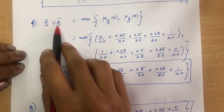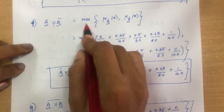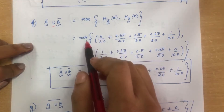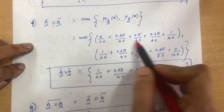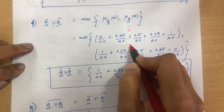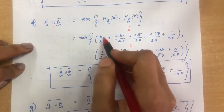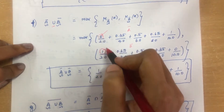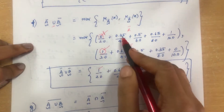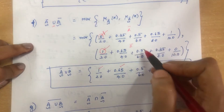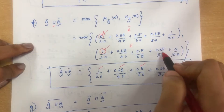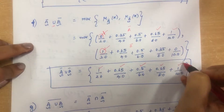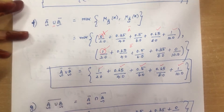For A complement union B complement, union means maximum. Comparing: max(0, 1) = 1 for 2.0; max(0.35, 0.65) = 0.65 for 4.0; max(0.5, 0.5) = 0.5 for 6.0; max(0.65, 0.35) = 0.65 for 8.0; max(1, 0) = 1 for 10.0. Result: 1/2.0 + 0.65/4.0 + 0.5/6.0 + 0.65/8.0 + 1/10.0.